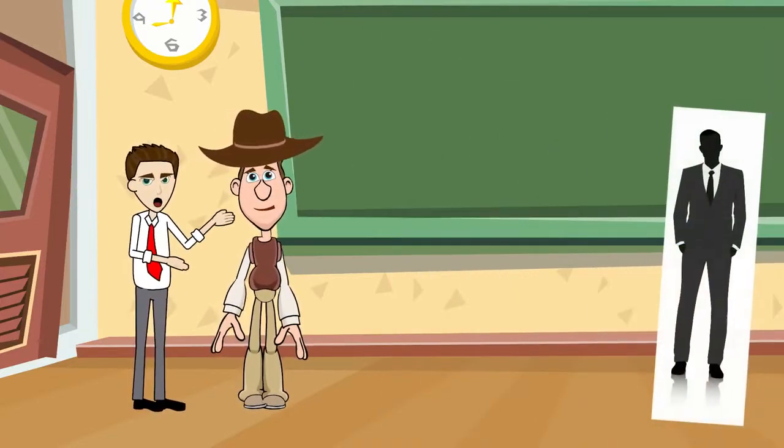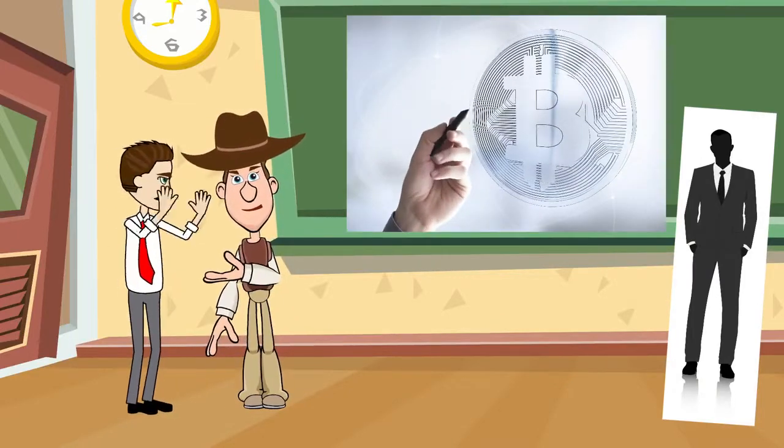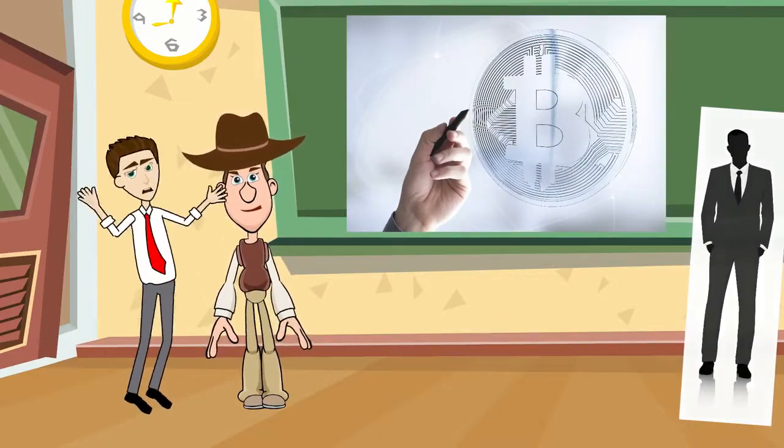Satoshi Nakamoto is the mysterious name associated with Bitcoin creation, but nobody knows for sure who created Bitcoin.